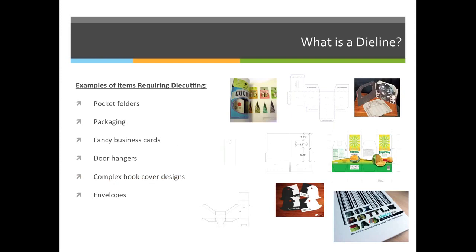Some examples of things that require die cutting: anything that requires a non-traditional cut. If it's an 8.5x11 sheet of paper, you can cut that on a paper cutter — straight edges, 90-degree angles. But a package, a book that has a hole in the cover, a pocket folder, birds on business cards — these are not traditional. There is no paper cutter that can cut these as a standard cut. So you would create a mold and literally stamp down. It's kind of like a cookie cutter: you roll out the dough — the dough being our paper — take a cookie cutter and stamp down. The outline of the cookie cutter creates a cut, and then you pull off.